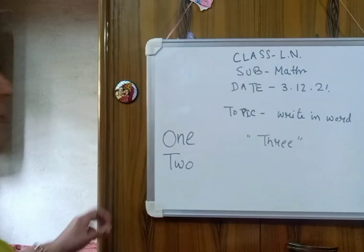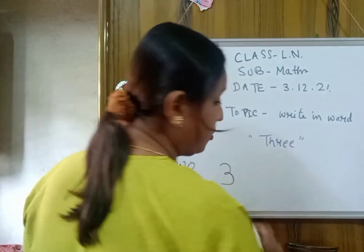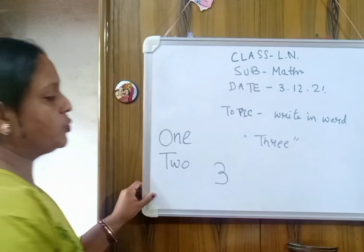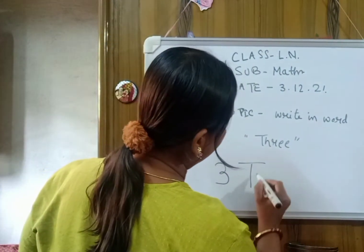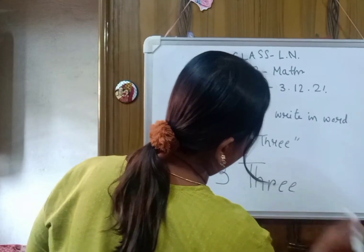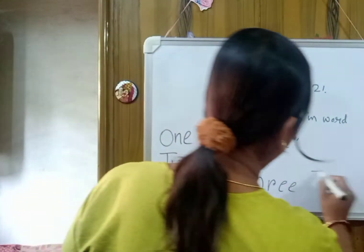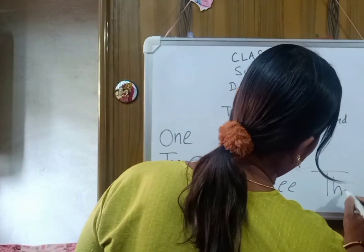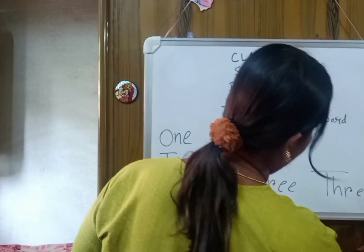So today we will learn number 3. This is number 3 or figure 3. The spelling of 3 is T-H-R-W-E-3. Okay? Again write T-H-R-W-E-3. Okay?